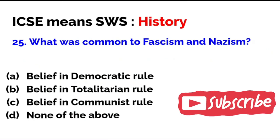What was common to fascism and Nazism — belief in democratic rule, belief in totalitarian rule, belief in communist rule, or none of the above? The correct answer is B — belief in totalitarian rule. It is a complete domination, one party, one leader, one nation kind of mindset. With this we come to the end of the important questions on history.